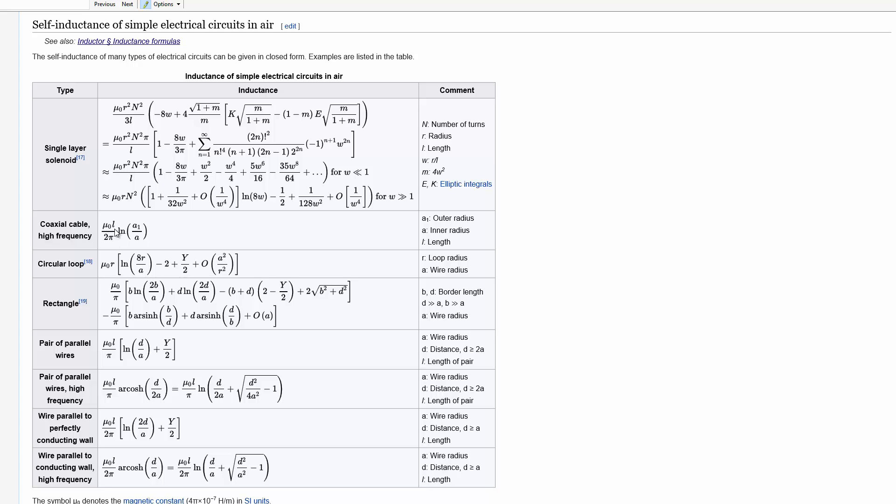the permeability of free space, and a loop length. There may be a factor of two pi or whatever, but as an approximation, we just take a loop length and multiply it by the permeability of free space.